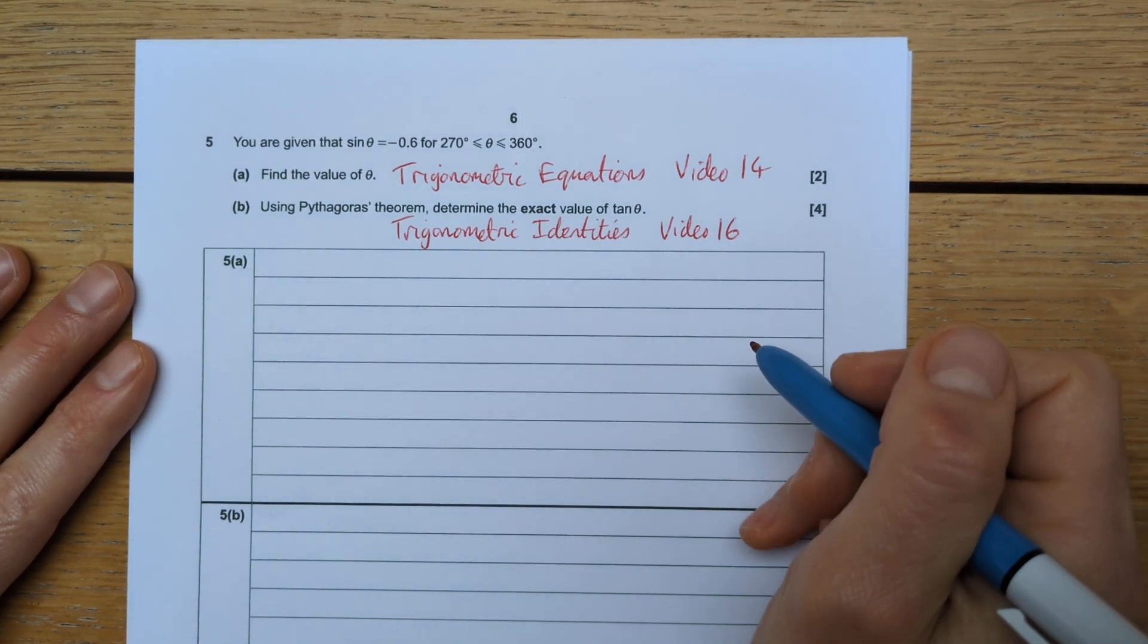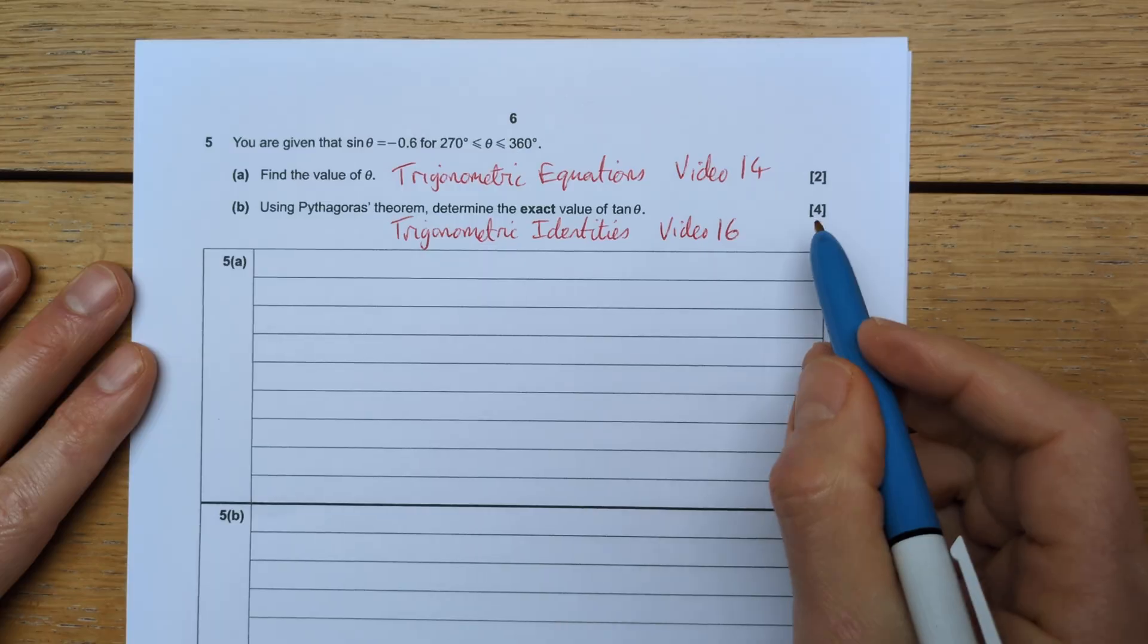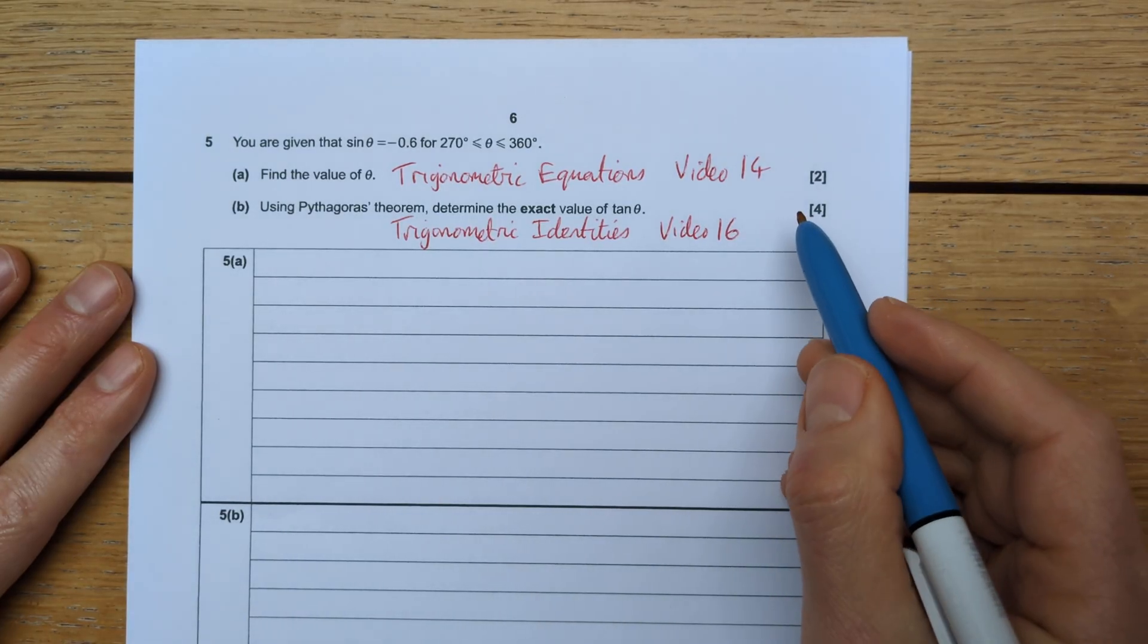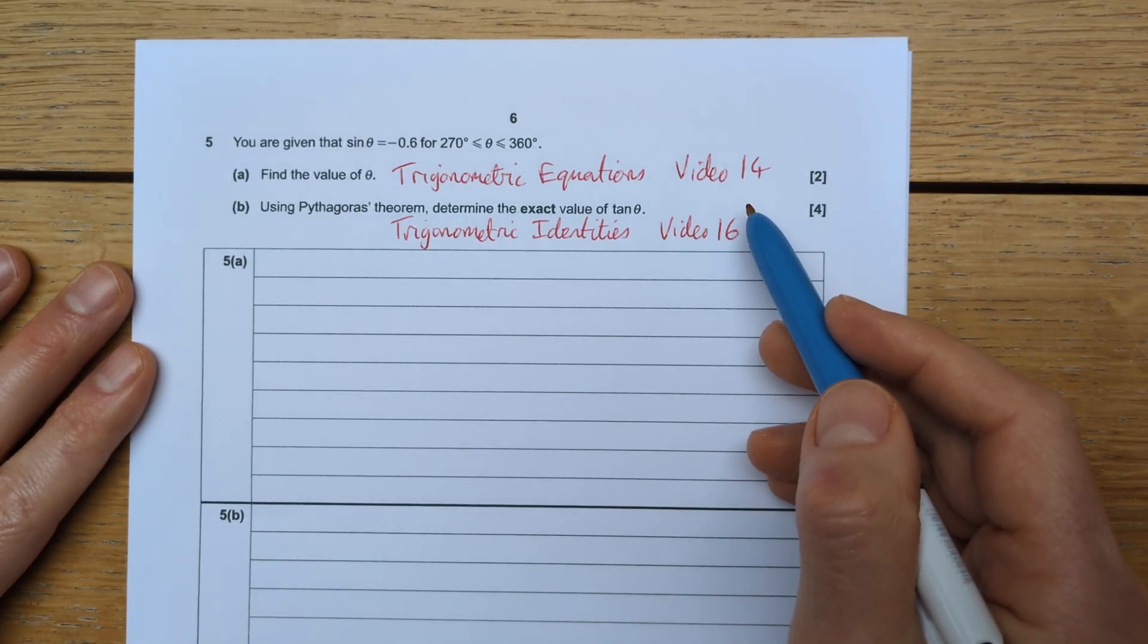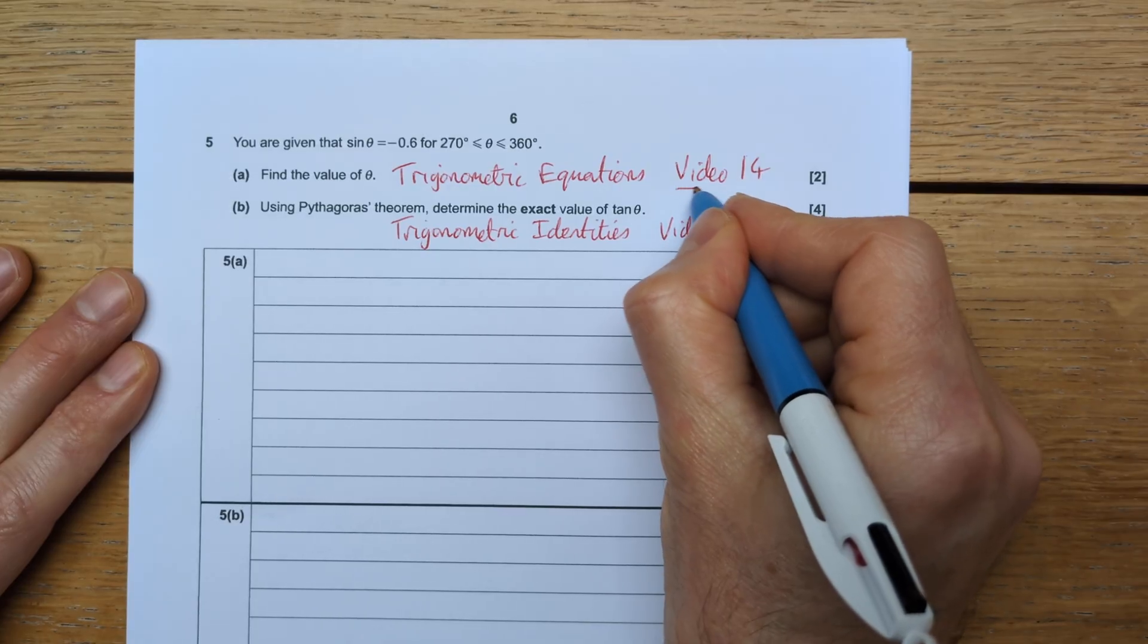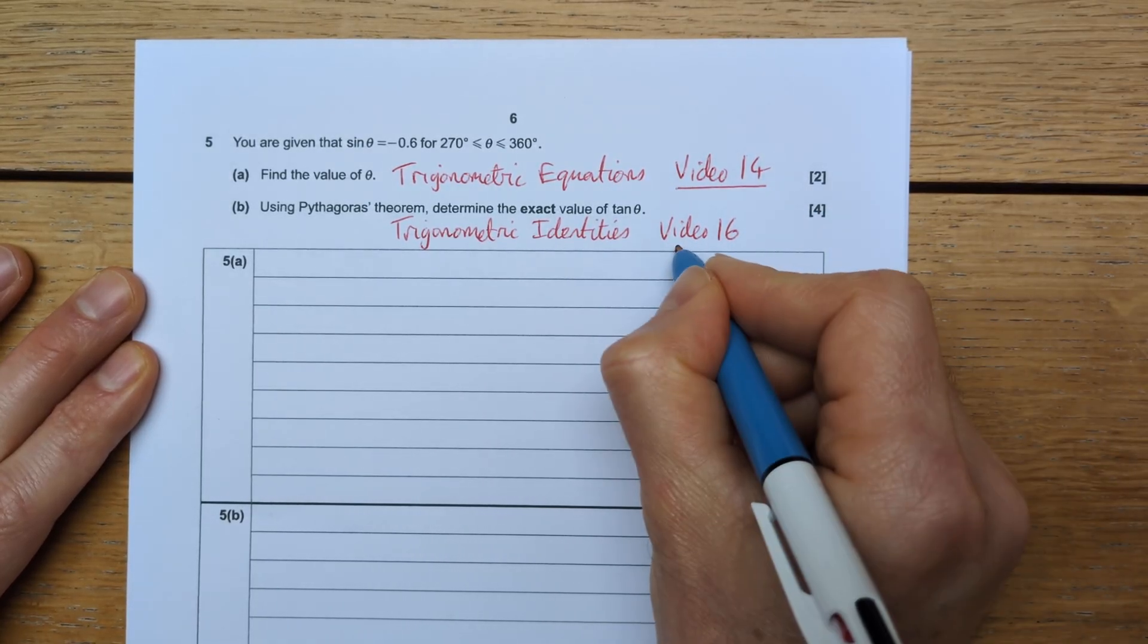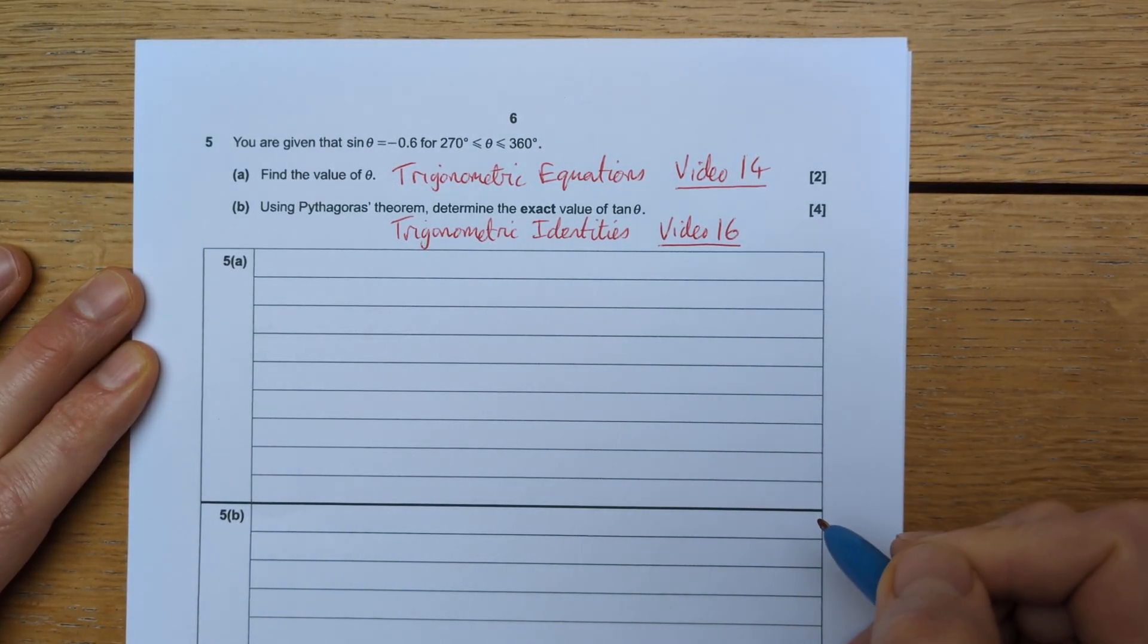Okay, so this is question five. Before you have a go at this question, make sure you have practiced your trigonometric equations and trigonometric identities. If you'd like extra practice on that, that's my video 14 for part A. Video 16 will be helpful for part B.